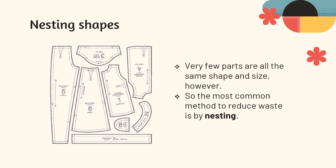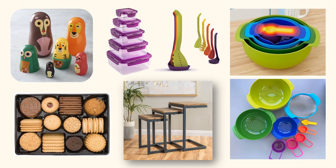But unlike that machine part, very few parts are all the same shape and size, so the most common method to reduce waste is by nesting them together instead of tessellating. When we say nesting, we don't necessarily mean birds in a tree — you might be familiar with the word in terms of nesting tables, nesting dolls, nesting bowls. These are lots of different examples of products that use nesting really efficiently in order to maximise space.